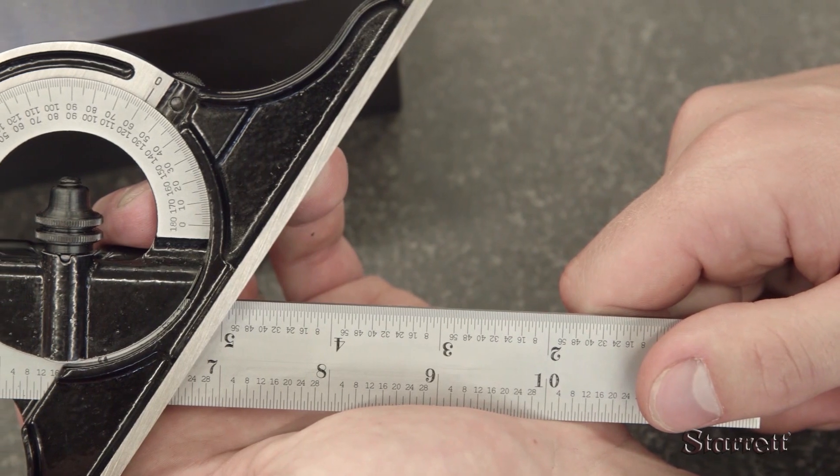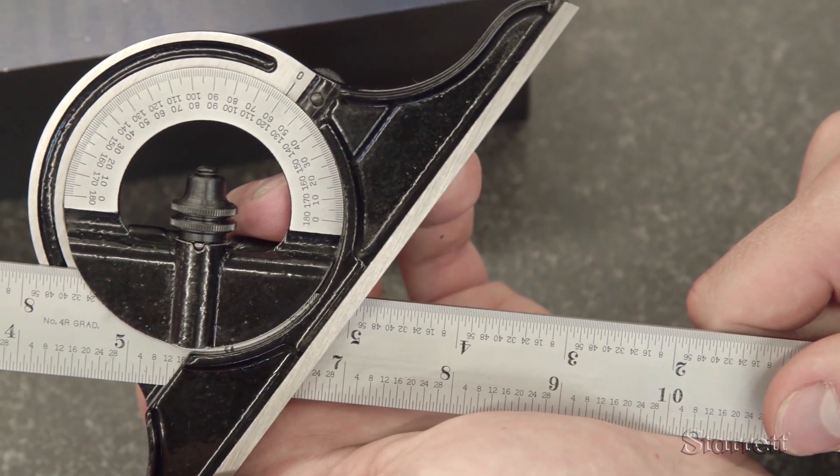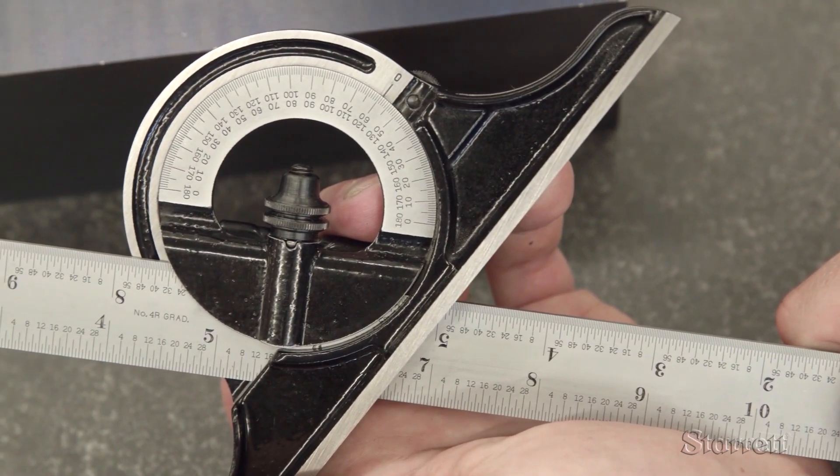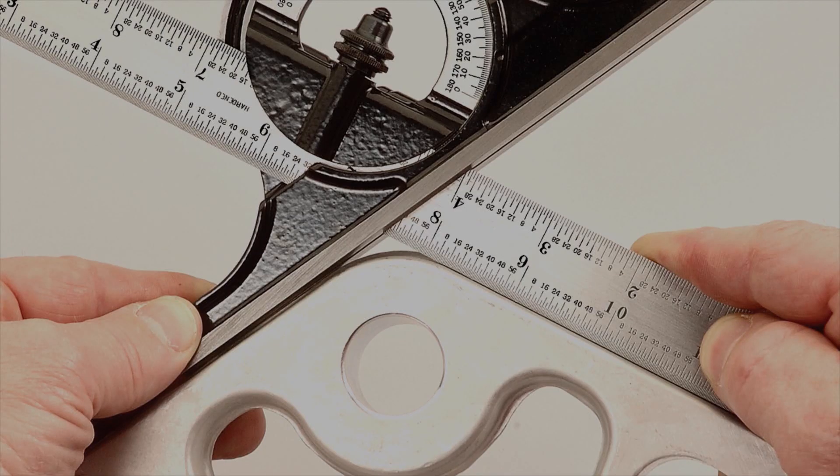The protractor head is most widely used to check angles. Portable and accurate, it is very useful for incoming inspection of large parts with many different angles.